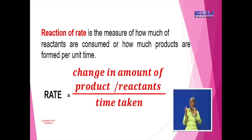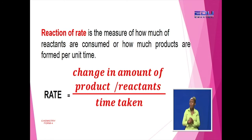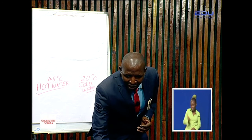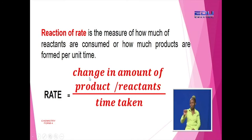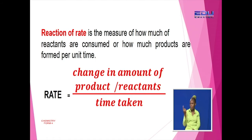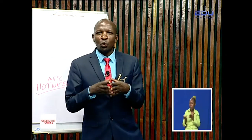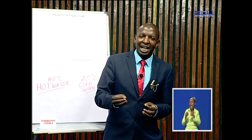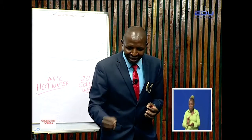A rate of reaction is a measure of how much of the reactants are consumed or how much of the products are formed per unit time. That can be represented as: rate is equal to change in the amount of the product or reactants over the time taken. So we are looking at how much of the reactants are consumed or how much of the product is formed per unit time. That is what we define as the reaction rate.